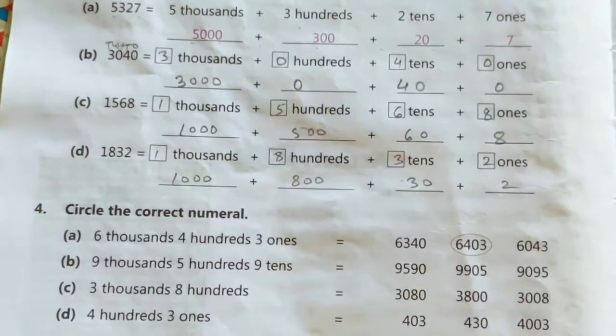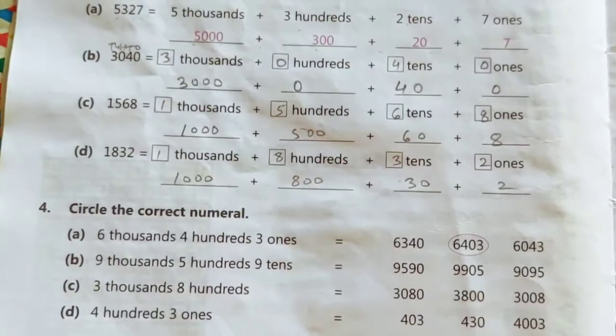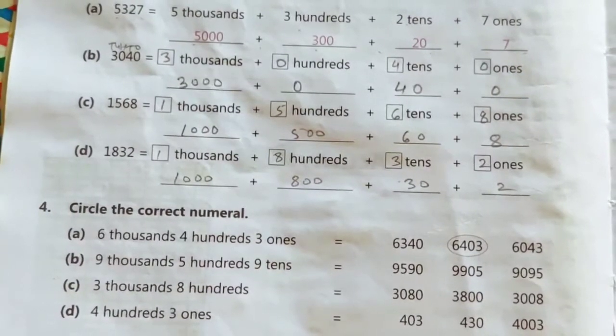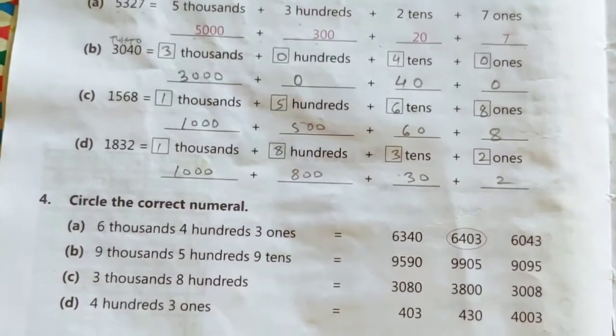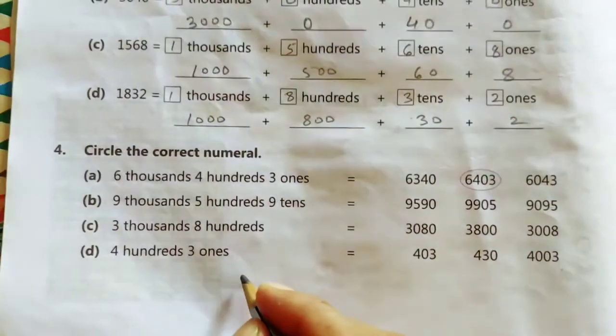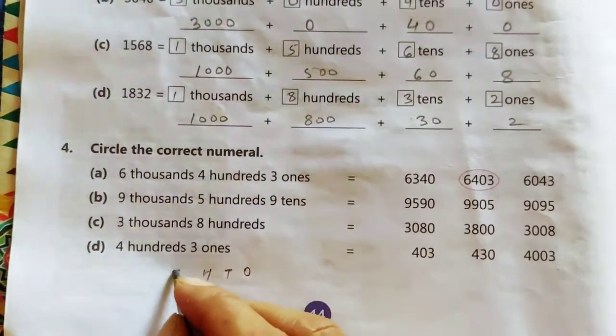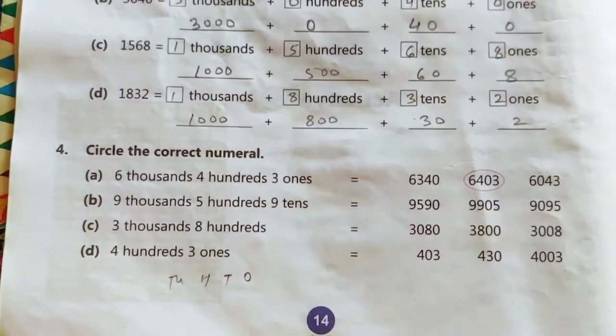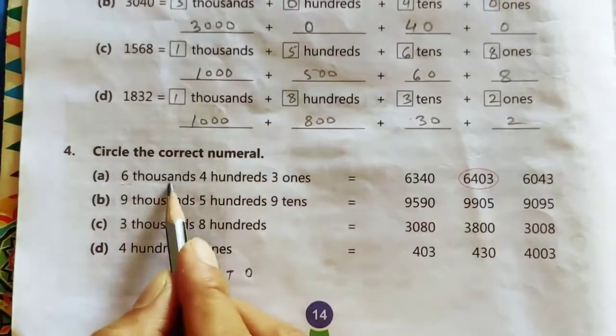Now question number 4. Circle the correct numerals. Here what we have to do? First of all, we have to make a pattern that is 1, 10, 100, and 1000. Now what is written? 6,000.